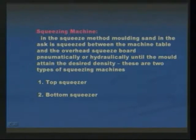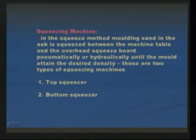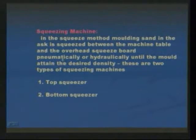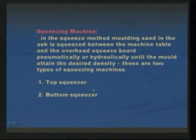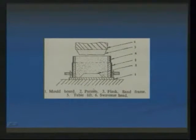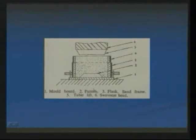Now let us go to the next machine — that is the squeezing machine. In the squeezing method, molding sand in the flask is squeezed between the machine table and the overhead squeeze board, pneumatically or hydraulically, until the mold attains the desired density. There are two types of squeezing machines: top squeezer and bottom squeezer. This one is a top squeezer.